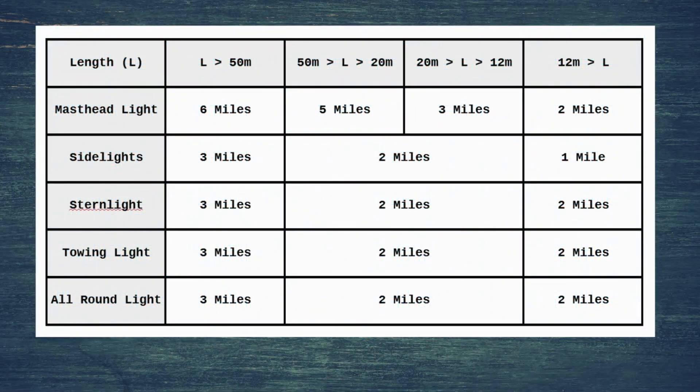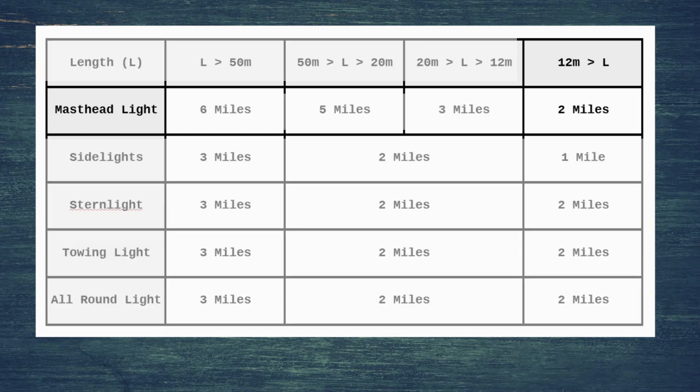So my question for today, which you can discuss in the comments below, is can you use these ranges to define a specific range of restricted visibility? For example, if you cannot see a small vessel at 2 miles range, are you in restricted visibility? Likewise, if you cannot see a large vessel at 6 miles range, are you in restricted visibility?